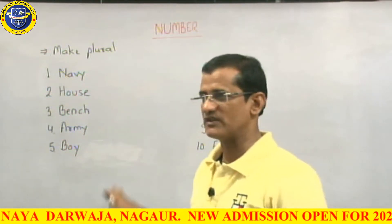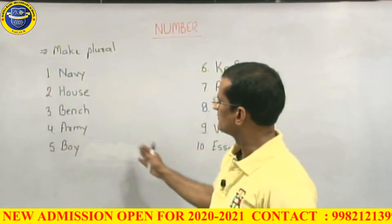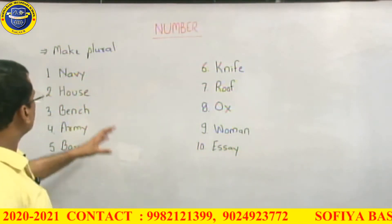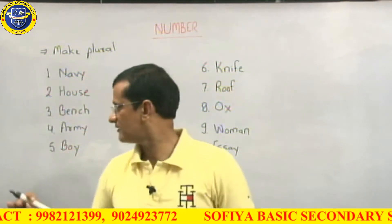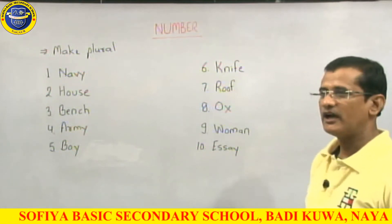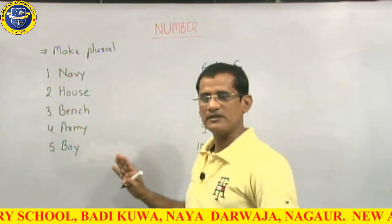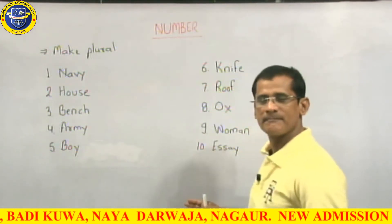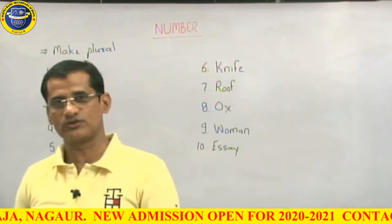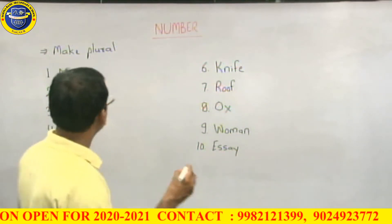Today we will apply the rules on these words and try to make them plural. The words written here are: Navy, House, Bench, Army, Boy, Knife, Roof, Ox, and Women. These are all singular. To make them plural, we have to remember all the rules which we learned earlier.